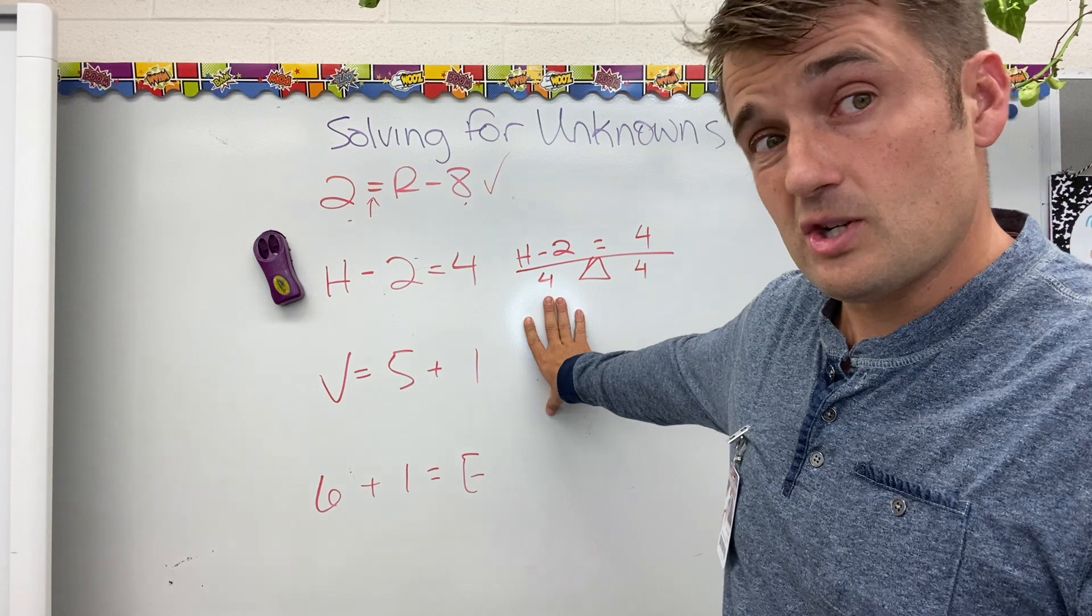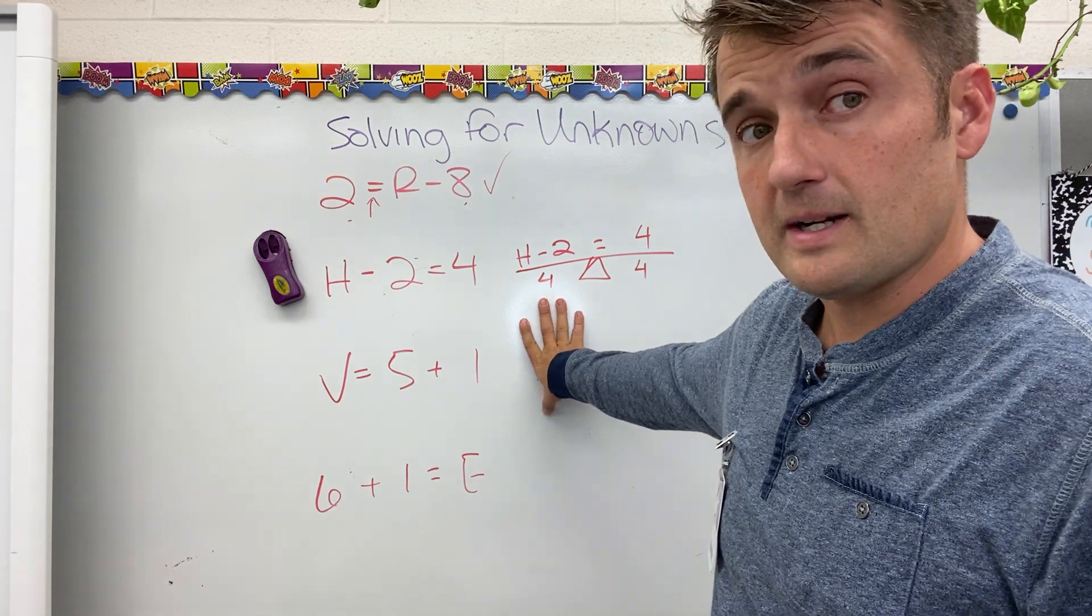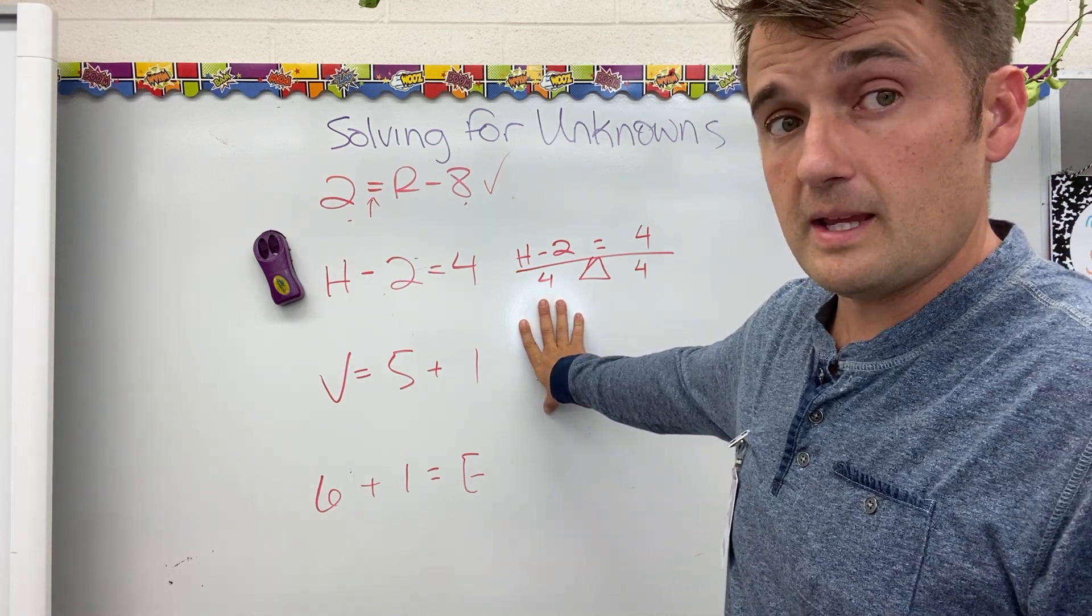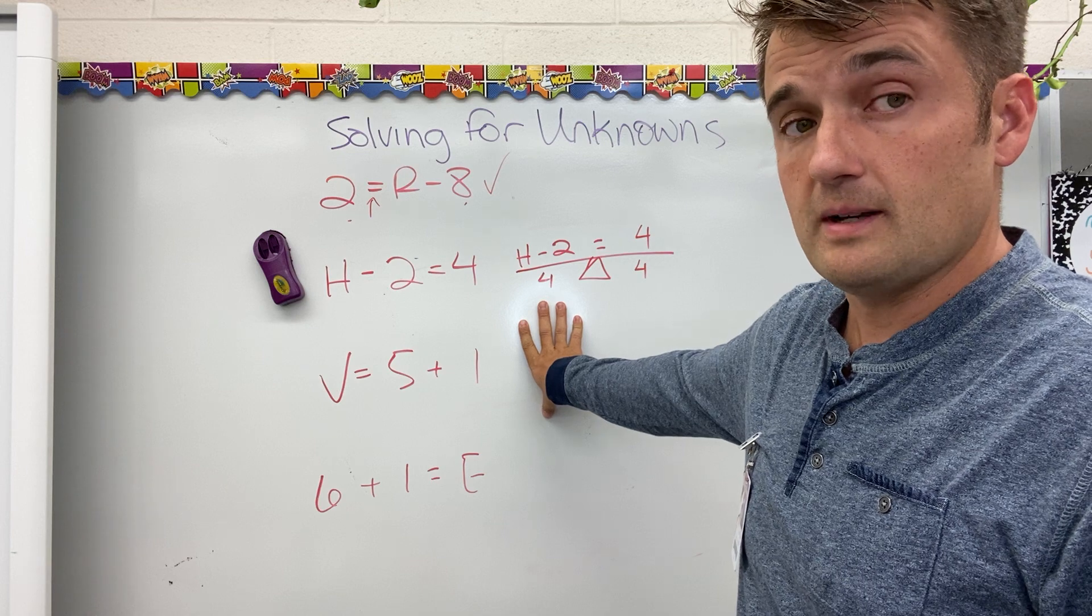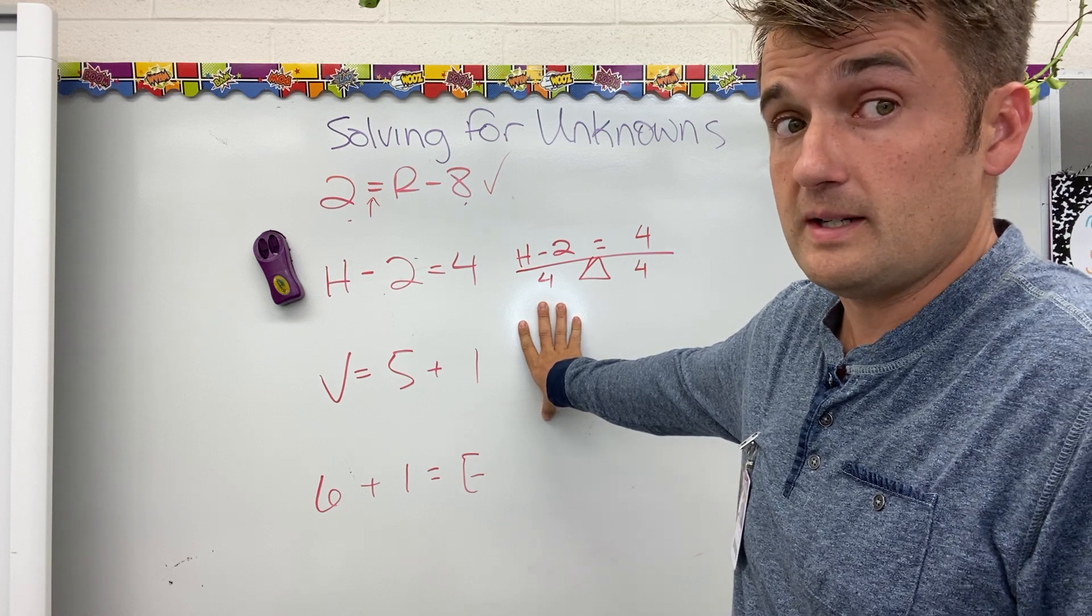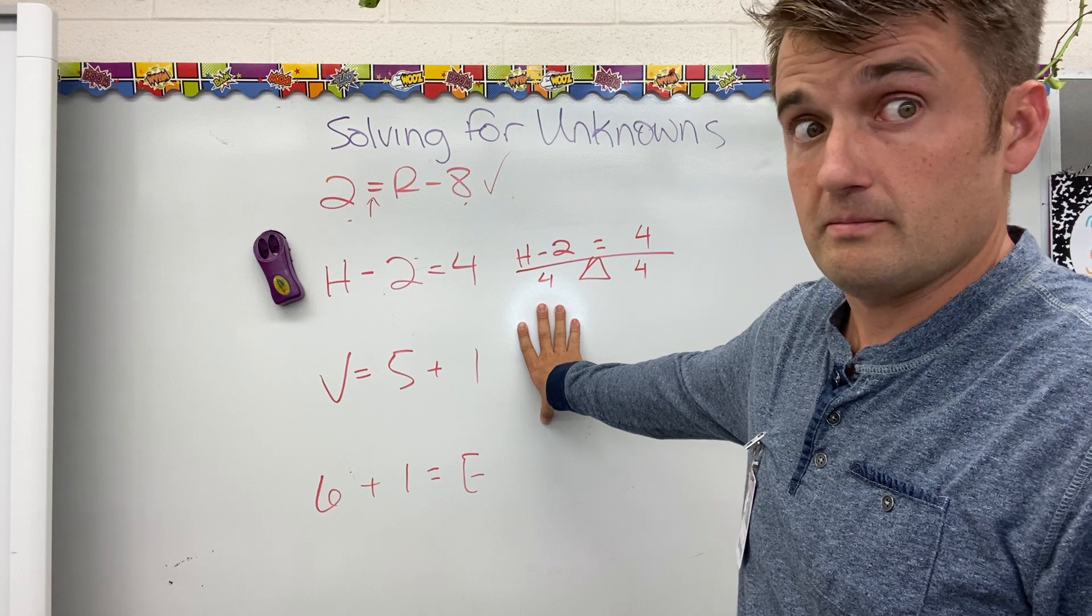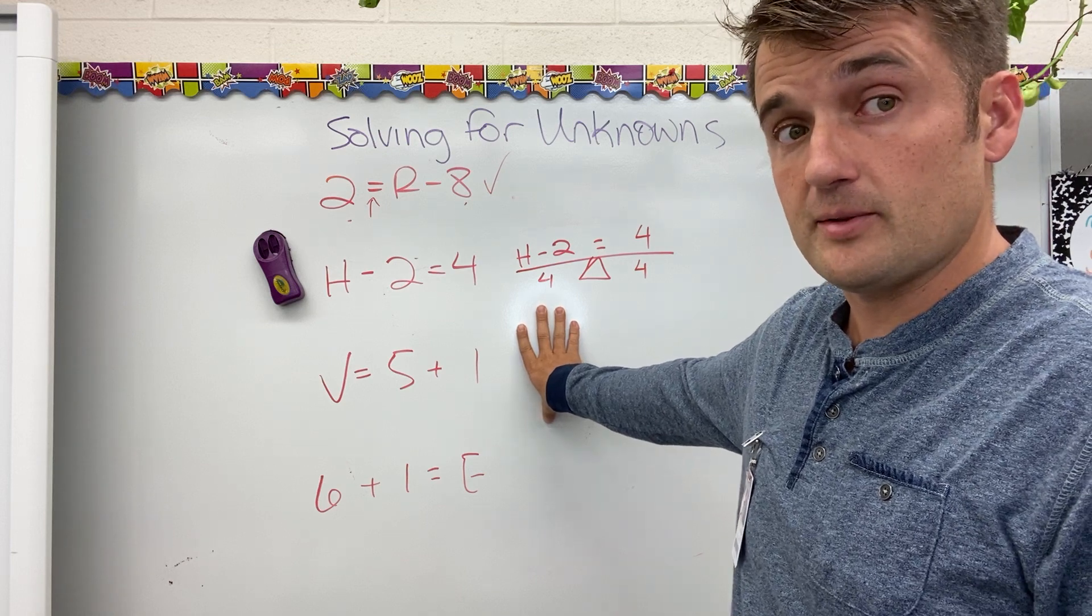And I can guess and check. I can say something minus 2 equals 4. I have some money. I give away $2. I have $4. How much money did I have to begin with? 6 works.